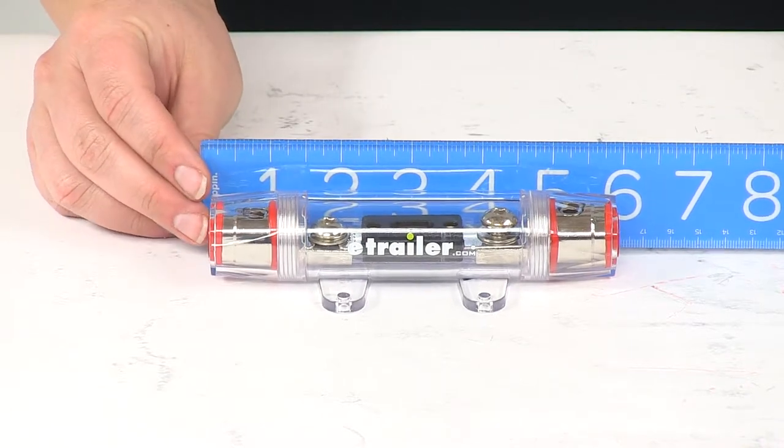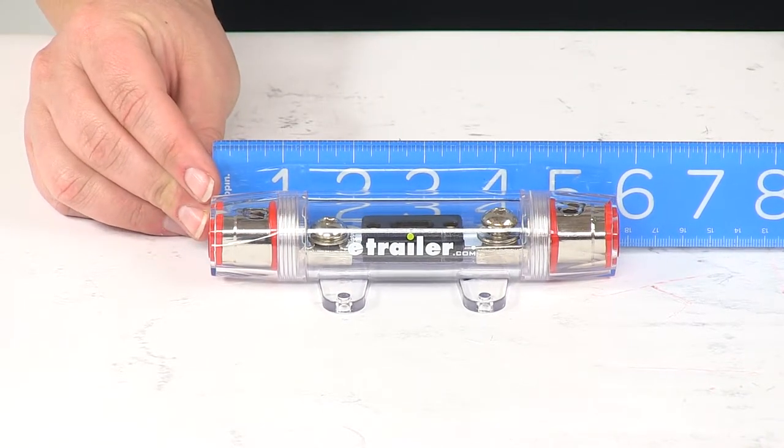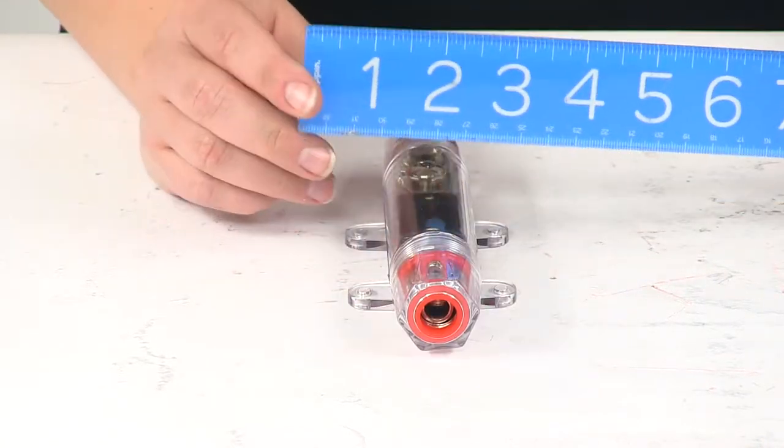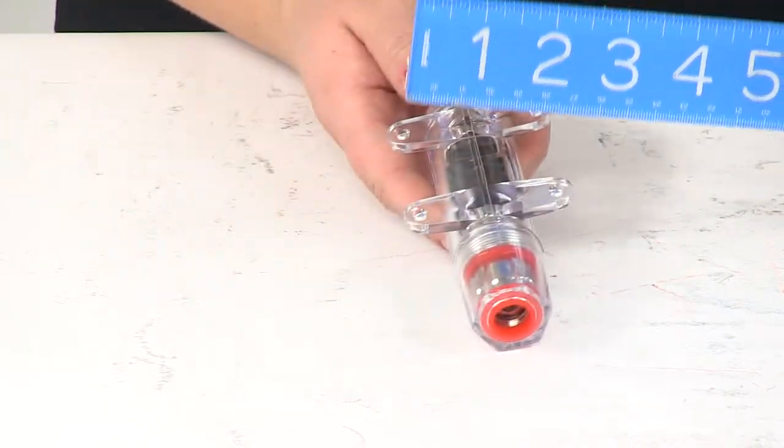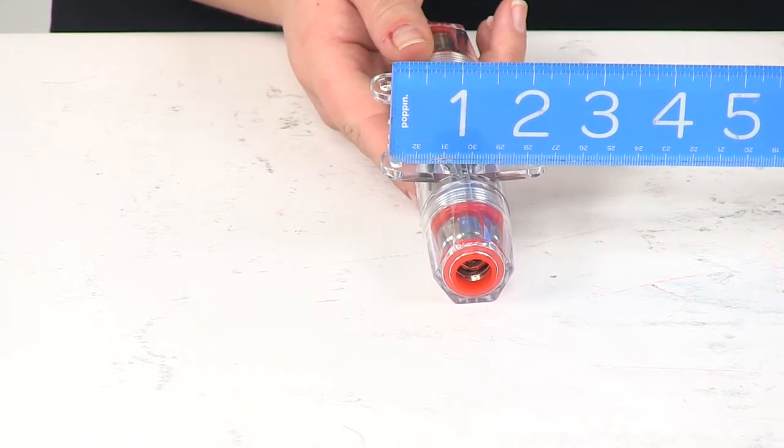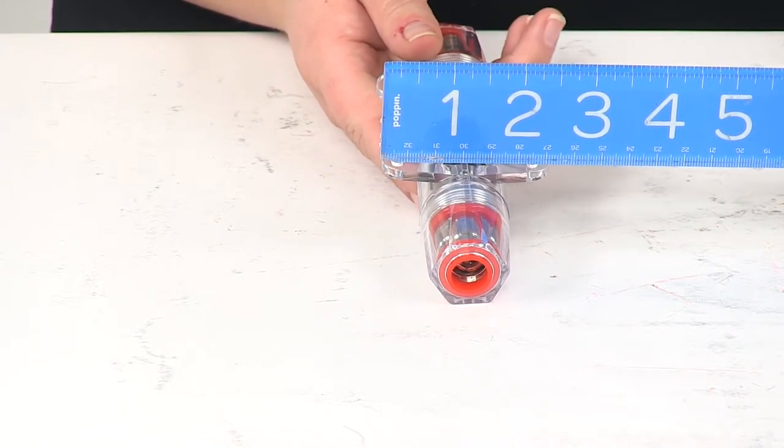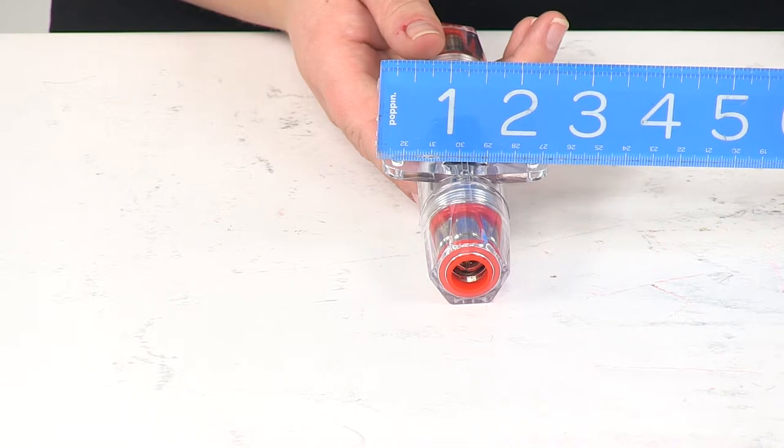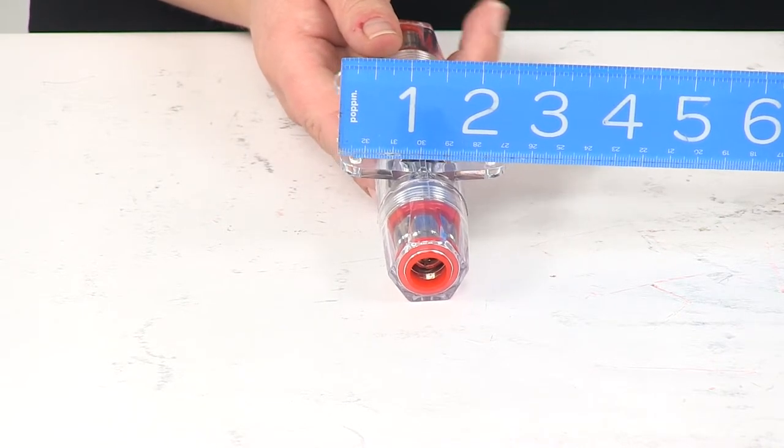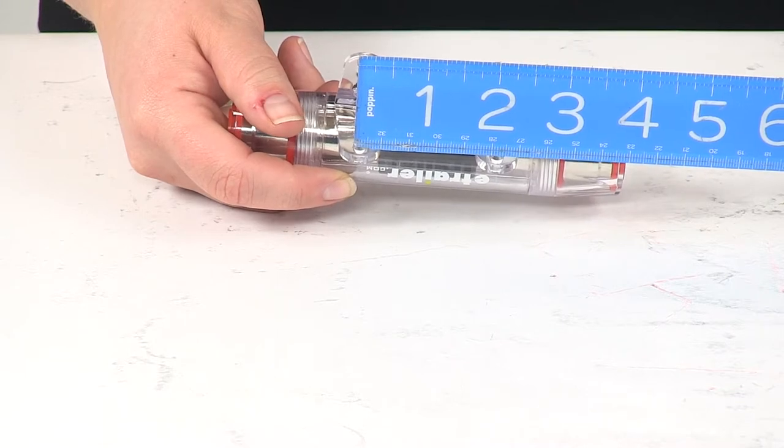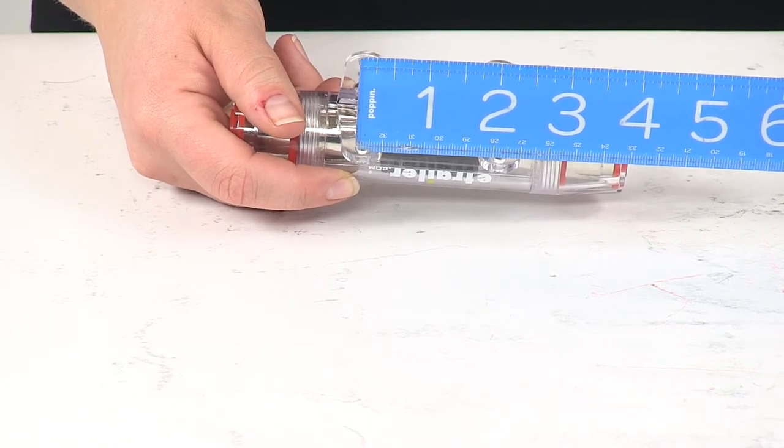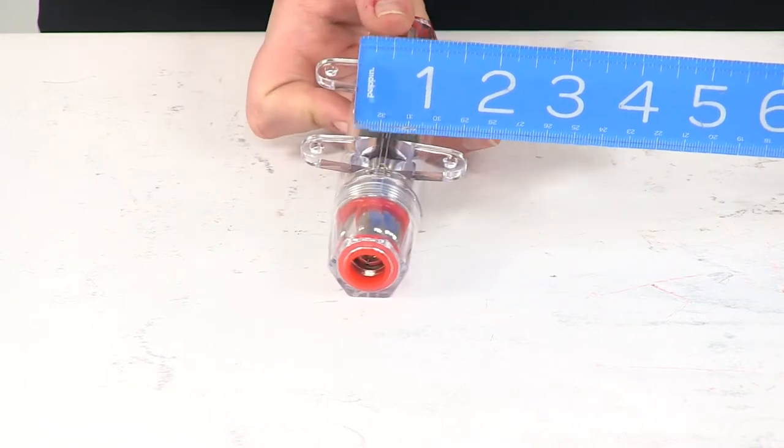The overall measurement on this fuse holder is going to be about five and a half inches and it's going to be about one and a half inch in diameter. The mounting holes are going to be about two inches apart center on center. That mounting flange is going to be about two and a half inches in total. The mounting holes are going to be two inches apart center on center in both directions.